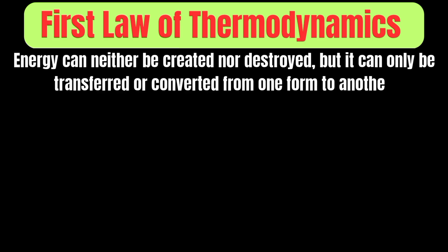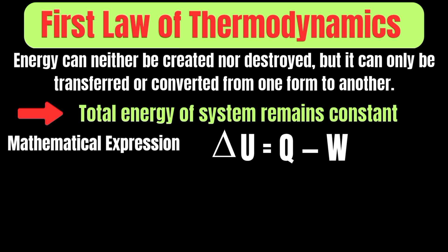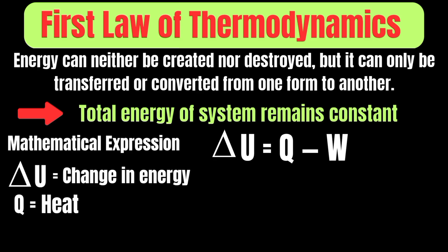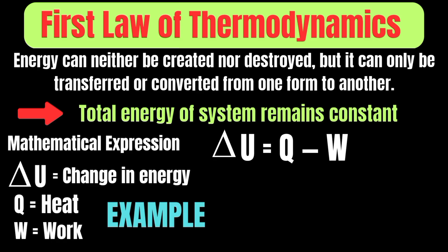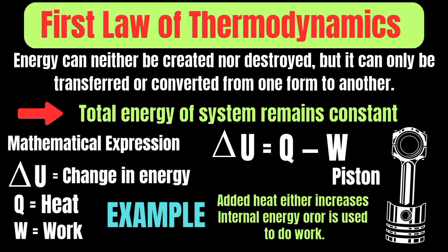The first law of thermodynamics, also known as the law of conservation of energy, states that energy can neither be created nor destroyed, but it can only be transferred or converted from one form to another. The total energy of a system remains constant. The mathematical expression is delta U = Q − W, where delta U is the change in internal energy, Q represents heat, and W stands for work done. For example, when heat is added to a gas inside a piston, the gas molecules gain energy, increasing the internal energy. If the gas expands and pushes the piston outward, it does work on the surroundings, and overall energy is conserved.